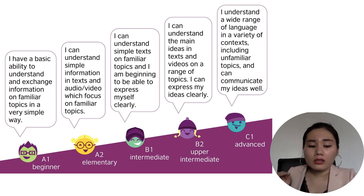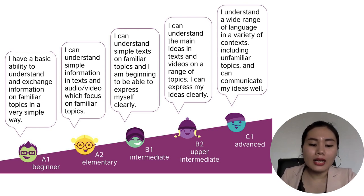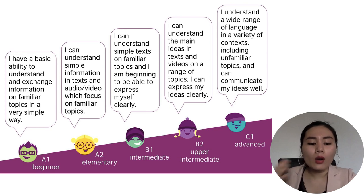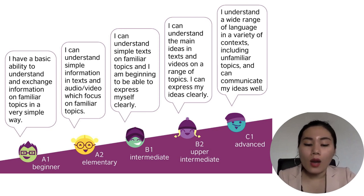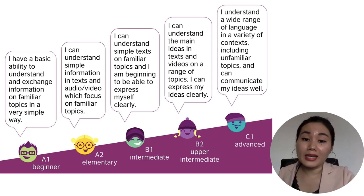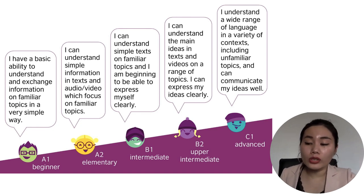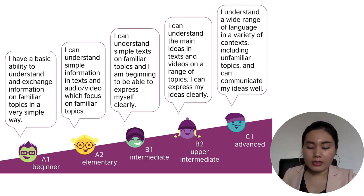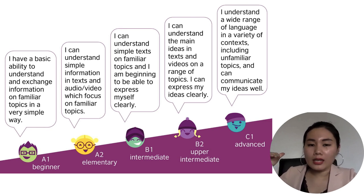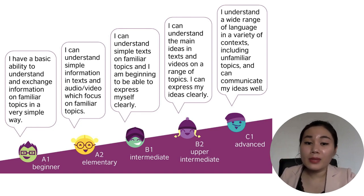Chúng ta không nên đặt mục tiêu là từ beginner mà lên một bước đến advanced. Từ A1 có thể giao tiếp cơ bản, lên A2 là có thể hiểu được các thông tin cơ bản trong đoạn text hoặc đoạn audio hoặc video về các topic thân quen. Và khi mà chúng ta đã đạt được mục tiêu từ A1 lên A2 rồi thì chúng ta sẽ tính tiếp đến những bước tiếp theo, cho đến khi chúng ta thành thạo đến phần advanced và có thể xem phim mà không cần phụ đề.